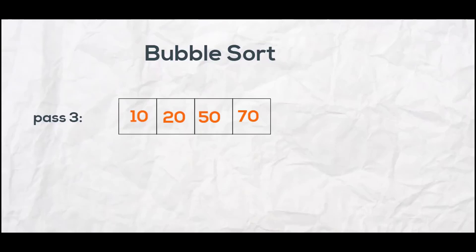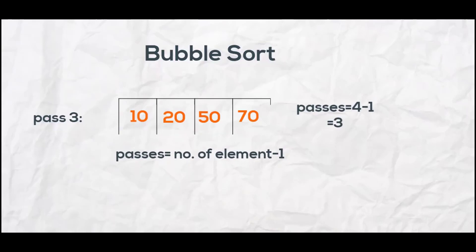Then 20 is compared with 50, and 50 is compared with 70 — there is no swapping in the second pass. In the third pass we start from the beginning again, and we can see all elements are in sorted order. In bubble sort, the number of passes equals the number of elements minus one.